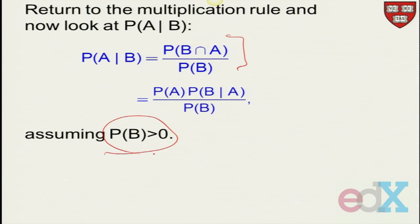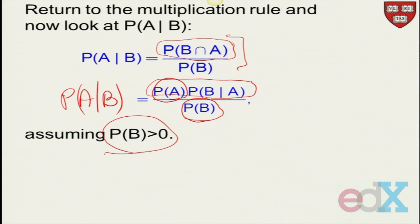Now, what we had from the multiplicative rule is we can apply it to this term up here and get that the numerator is equal to P of A times P of B given A. So look what's happened. We have written P of A given B in terms of simple quantities, P of B and P of A. And what conditional do we have here? P of B given A. In other words, the roles of A and B have been switched.